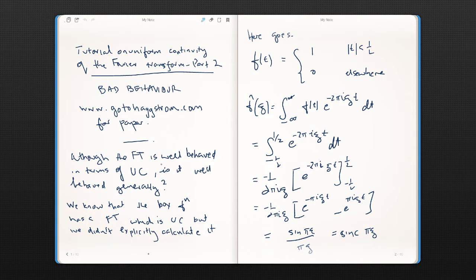In part 1 we showed that the Fourier Transform is well behaved in terms of Uniform Continuity, but is it well behaved generally? We know that when we started with the simple box function that gave us a Fourier Transform which is uniformly continuous. But we didn't explicitly calculate it. I just told you that it was the sinc function. So let's just do the integration.